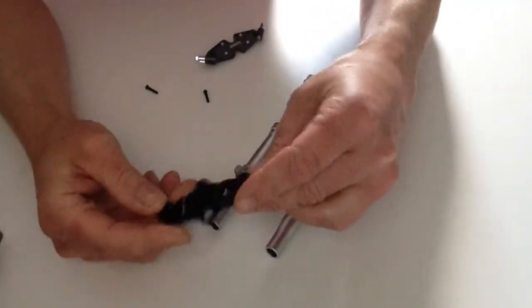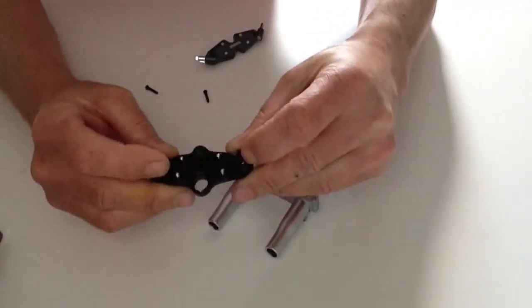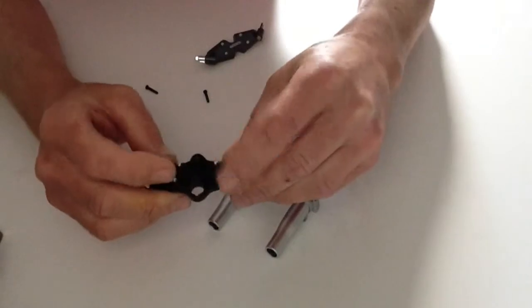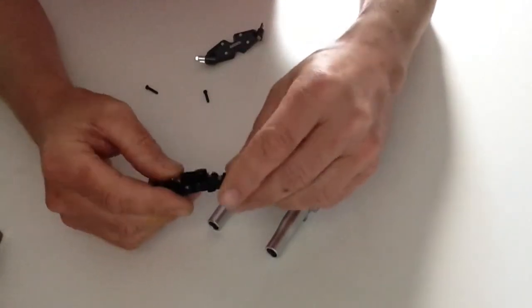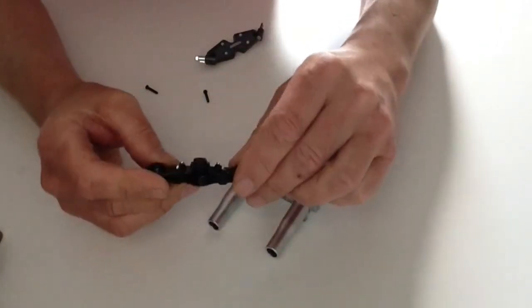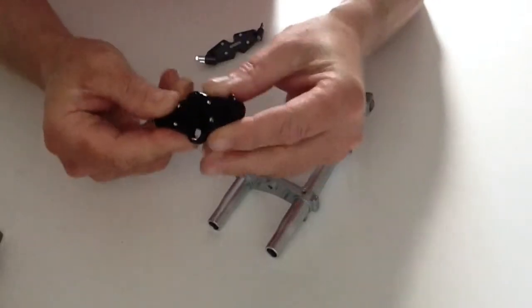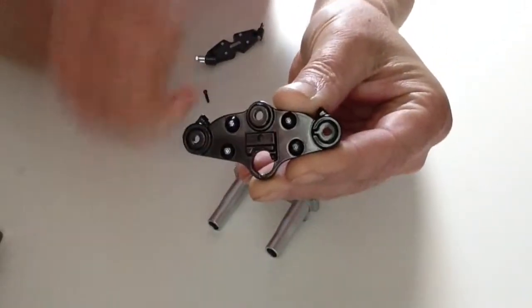Take your top yoke and just notice the detail with the head bolts. They are going to be facing downwards, and you will also notice that one of the parts here